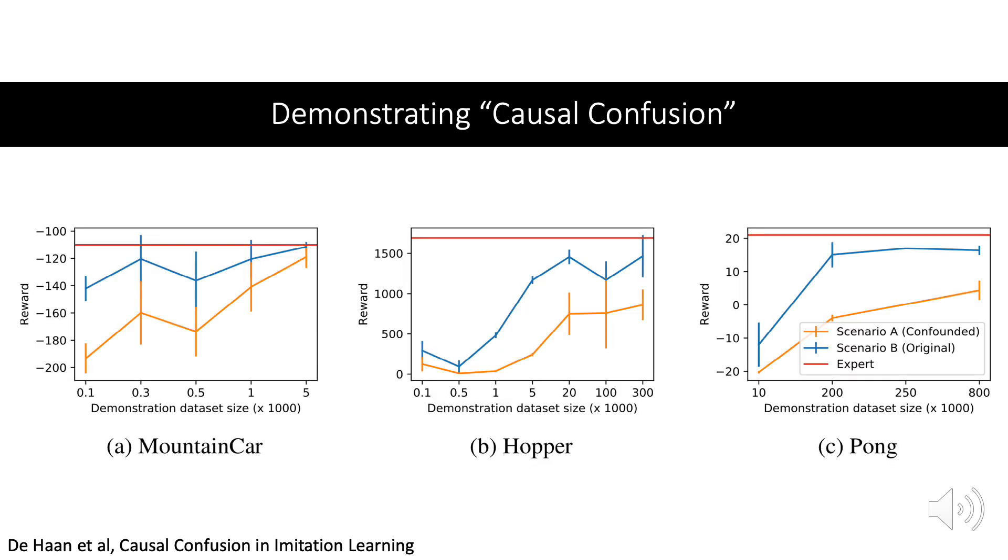We train a behavioral cloning agent on the original state of these environments, as well as on the modified confounded state. We then execute the agents in the environment and collect rewards. We are interested in the low data regime, so the x-axis indicates the number of samples used for behavioral cloning. We see that the original state in blue quickly gets expert-like rewards. However, the confounded state in orange, which has access to more information, performs significantly worse. So causal confusion is clearly present.